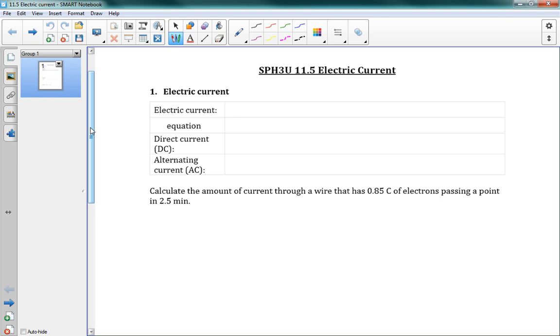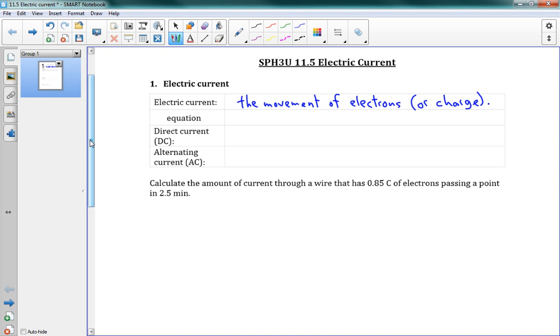So electric current is the movement of electrons, or we could say the movement of charge. The idea is that in our circuits, we have electric charge moving through our wires. And when we want to see how fast it's moving, we talk about current.